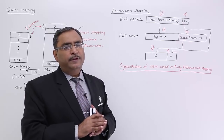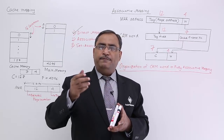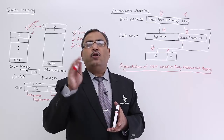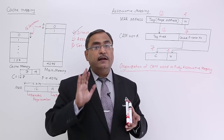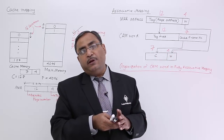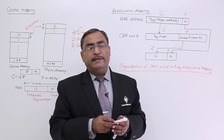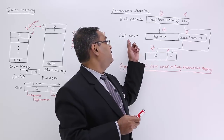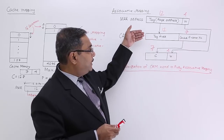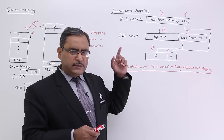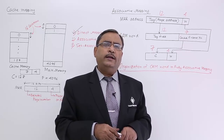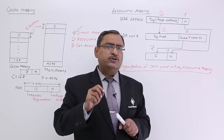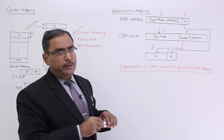In case of direct mapping, the main problem was that if multiple pages with the same tag number want to get loaded onto the cache memory, they cannot be loaded — only one of them can. That was the main disadvantage in direct mapping. In associative mapping, we brought the flexibility that any page can be loaded onto any frame, but the cost we are paying is high CAM cost — 19 bits per CAM word. That is why we are going to get one such mapping technique where there will be a little bit of flexibility and a little bit of constraint, and that will be the set associative mapping coming next.